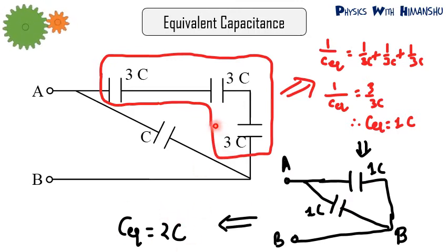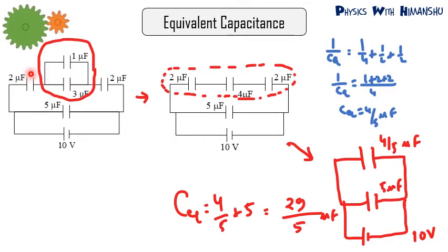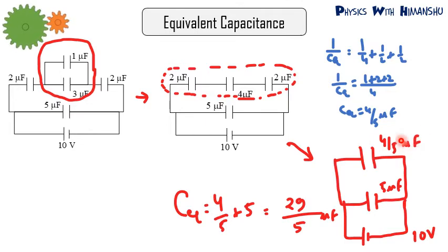You have to solve circuits step by step, first identifying which capacitors are in series and which are in parallel. For example, with 2 µF, 5 µF, 1 µF, 3 µF, and 2 µF at 10 V: the 3 µF and 1 µF in parallel give 4 µF. Then 2 µF, 4 µF, and 2 µF in series give 1/C_eq = 1/4 + 1/2 + 1/2 = 5/4, so C_eq = 4/5 µF. Finally, 4/5 µF and 5 µF in parallel give 29/5 µF.